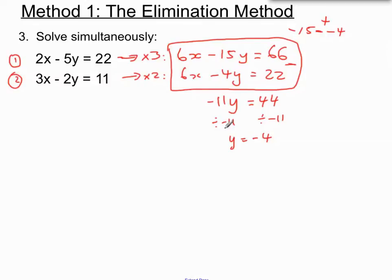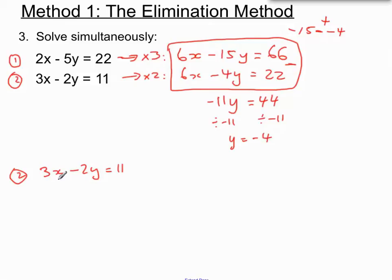We're going to substitute that into our original equation 2. Wherever there's a y, we're going to put minus 4 carefully. Our original equation 2 was 3x minus 2y equals 11. So instead of y, I'm going to put minus 4: 3x minus 2 lots of minus 4. We need to be careful of our negative signs here.